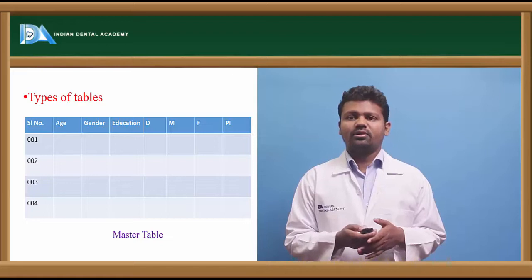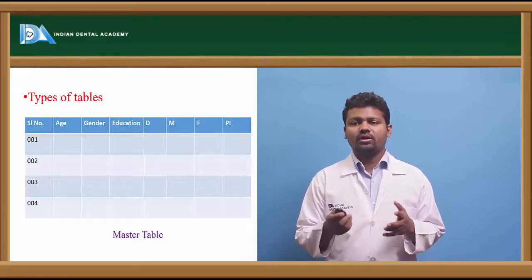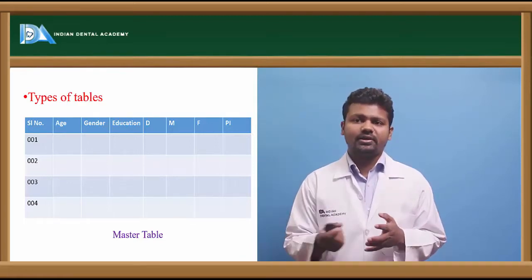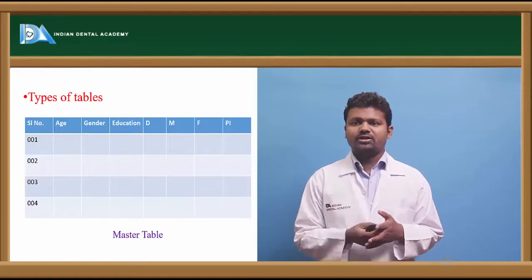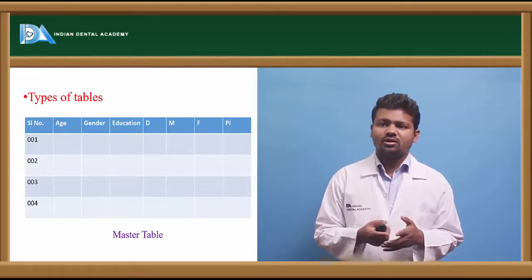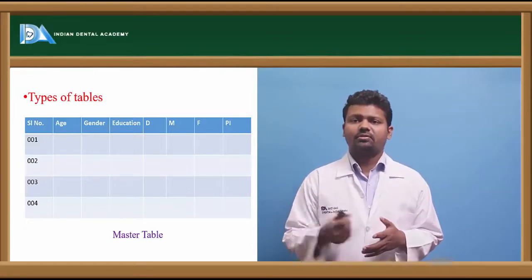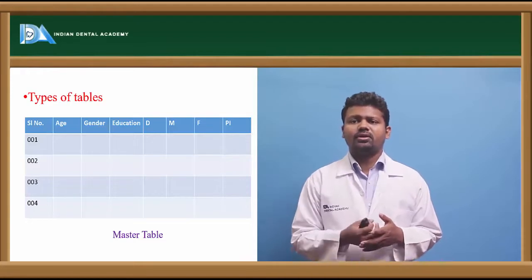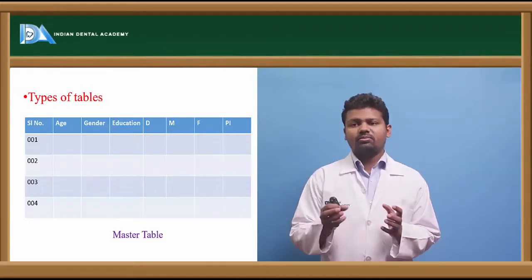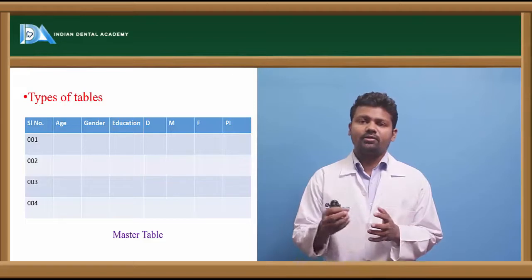These are the types of tables. The master table is used when you directly get data from the survey. You can see gender, education, decade, missing field, teeth, and plaque index records. This table is only used when you get data from the survey.